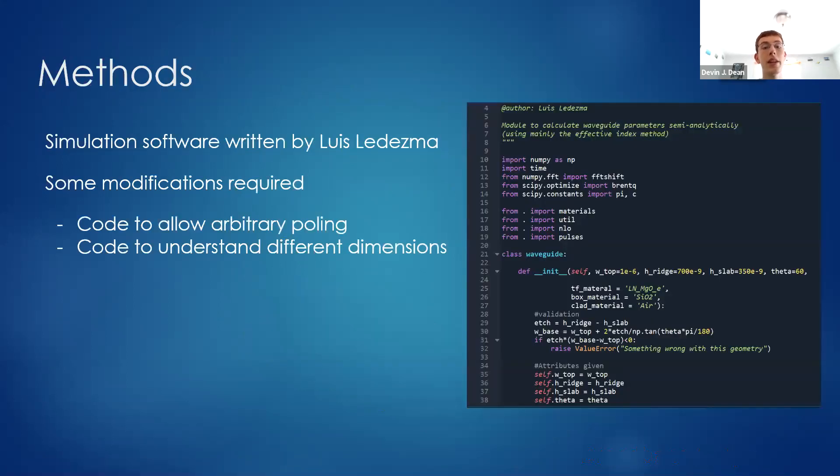The way that I'm carrying out this work is in Python, using simulation code written by Luis Lourdesma. I'm adding minor things to it to allow me to change, for example, the poling parameter, which previously was always held constant, as well as to understand how the different dimensions, how the width of the waveguide affects everything.